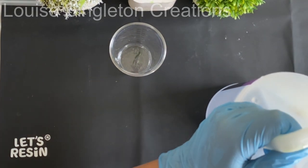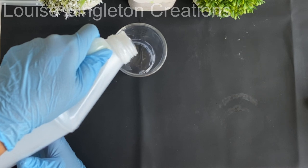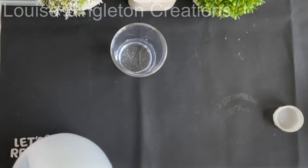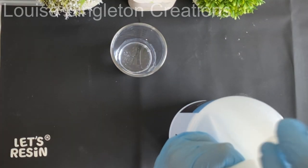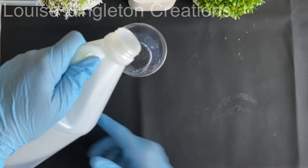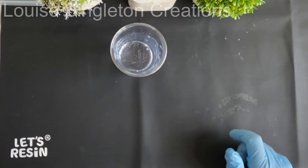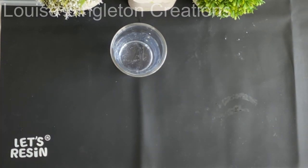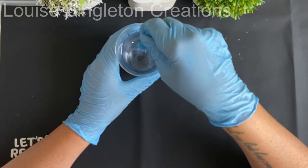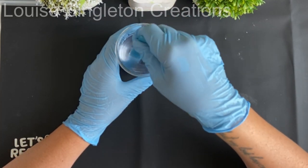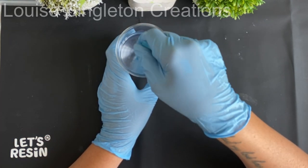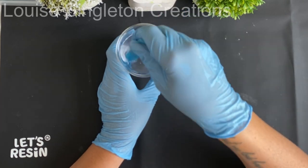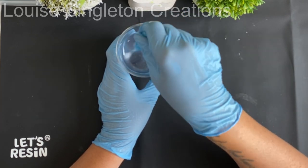First of all we need to mix up the resin. I'm using Let's Resin's resin and it's a one-to-one ratio measured by volume. What I should have done before measuring out the resin was fill the mold with water to find out its volume, but I was being a little bit lazy and I ended up not having quite enough. I can tell you now that in the end all together I used around 300 milliliters of resin.